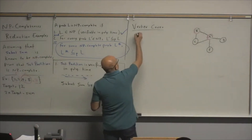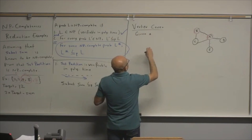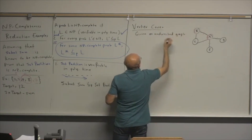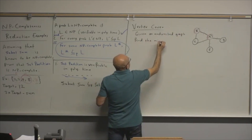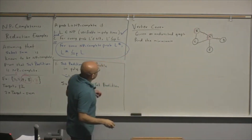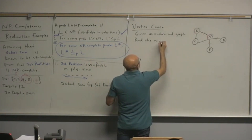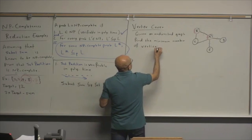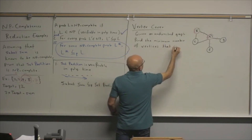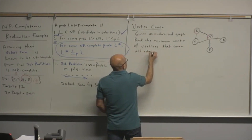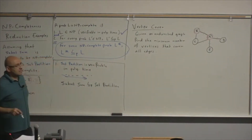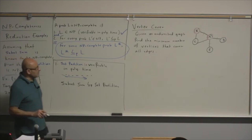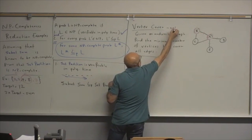We can formally describe the problem: given an undirected graph, find the minimum number of vertices that cover all edges. This is an optimization problem. So what's the decision version?